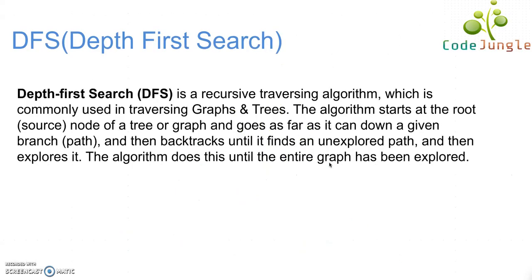DFS is a recursive algorithm which is commonly used for traversing graphs or trees. This algorithm starts at the root or the source node and goes in a specific path or branch unless and until the branch ends. Once the branch or the path ends, it backtracks to find an unexplored path and then explores it. This method continues till the whole graph or the tree has been traversed.